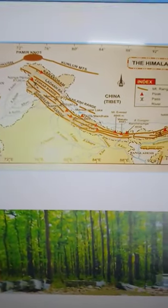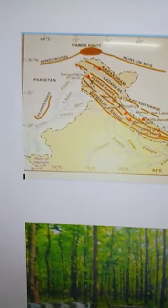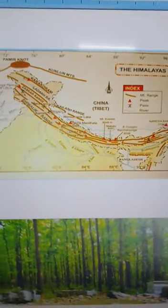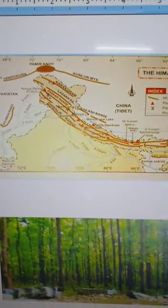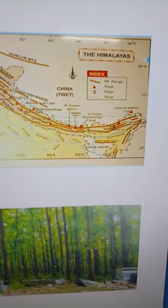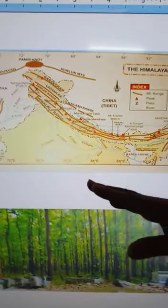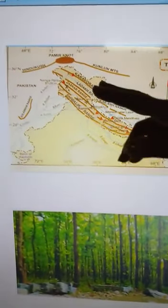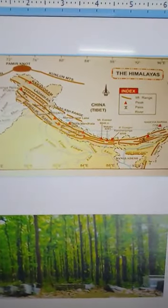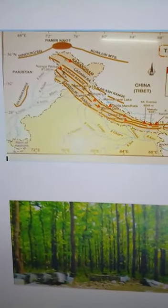The rivers that originate from the Himalayas — like the Indus, Brahmaputra, Ganga, and Yamuna — carry fertile soil with them. These rivers also generate hydroelectricity.